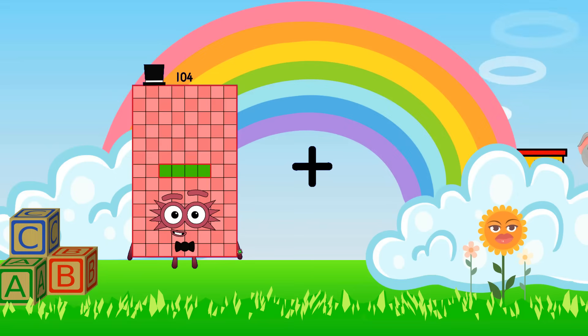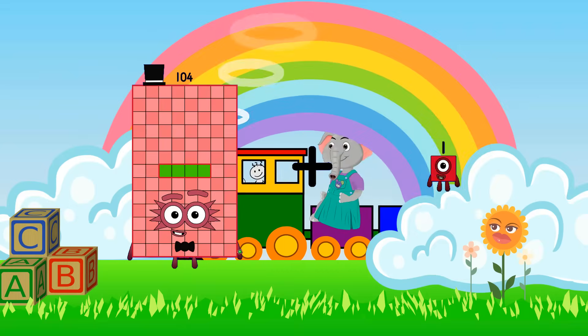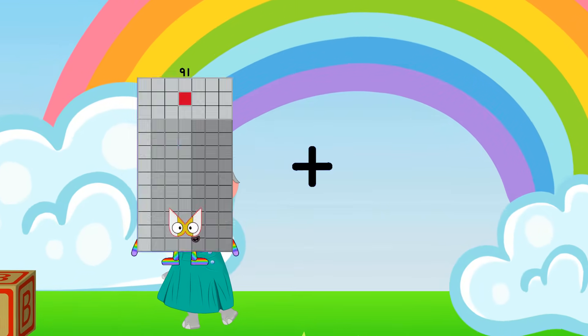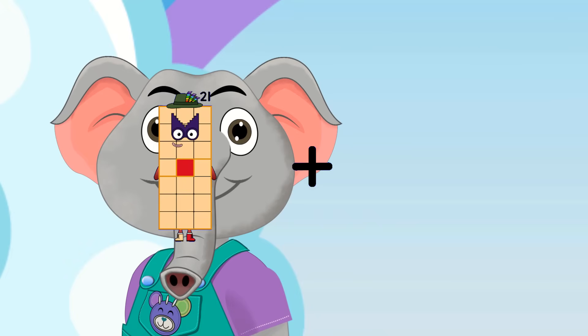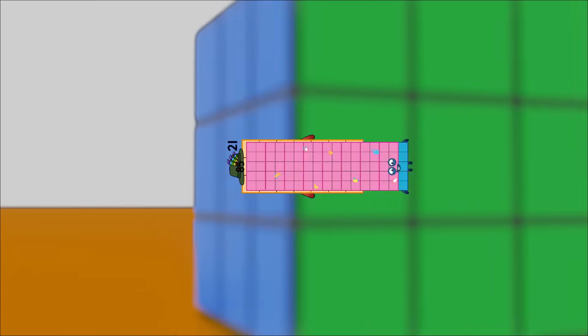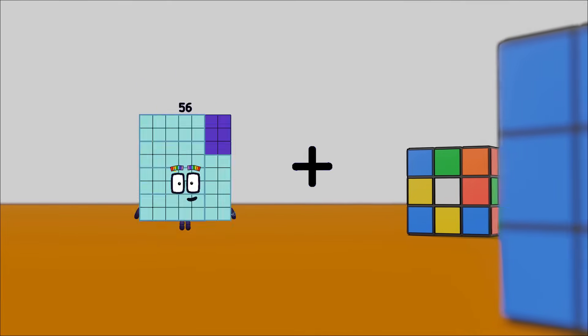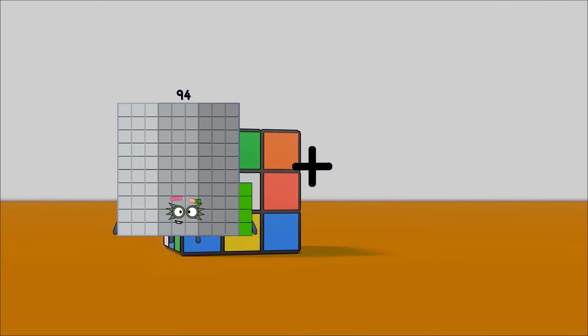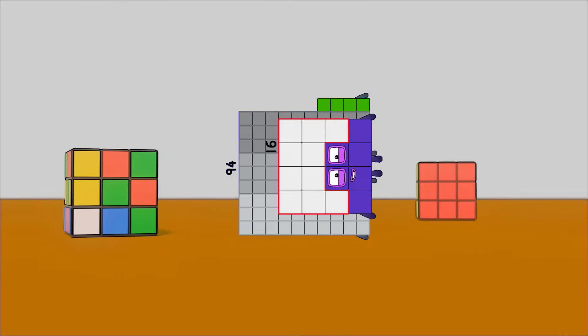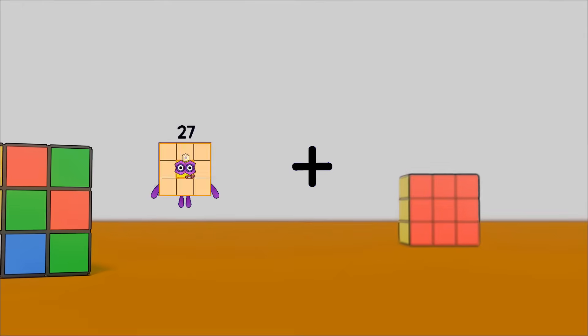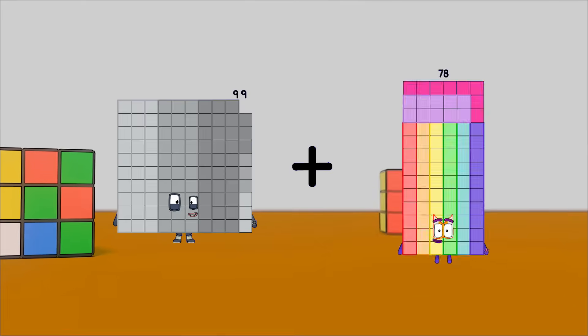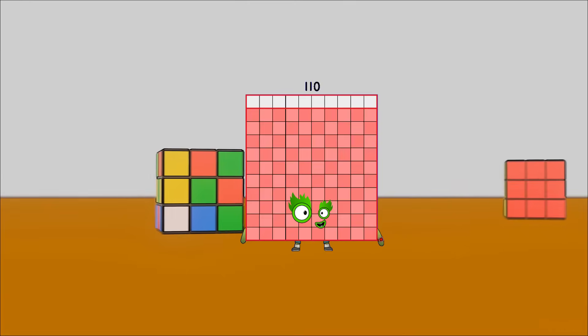104 plus 28 equals 132. 21 plus 85 equals 106. 94 plus 16 equals 110. 99 plus 11 equals 110.